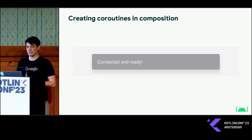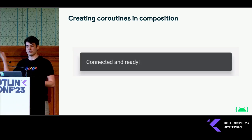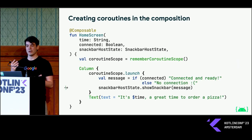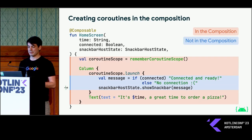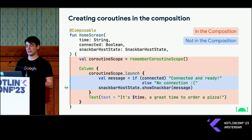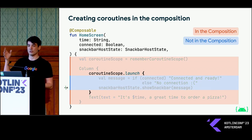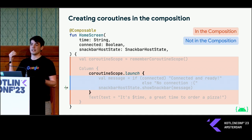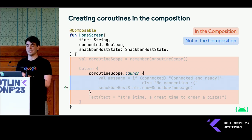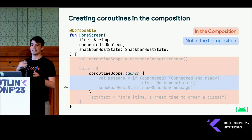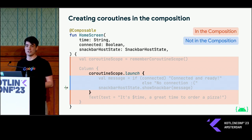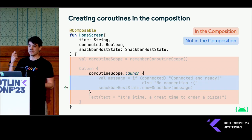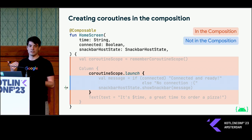If we run that code, we'll see that the snackbar does show on screen, but it keeps showing over and over again, just popping up endlessly. Why? Because the launch on the coroutine scope is directly in the body of composable code, it gets executed every time HomeScreen recomposes. With that time parameter updating every second, we're launching a new coroutine every second to show the snackbar. The only reason it doesn't pop up every second is that the snackbar implementation throttles them a bit.